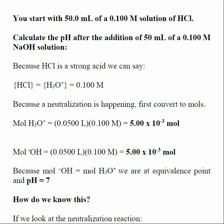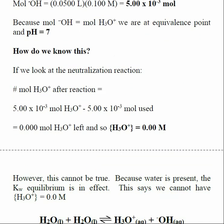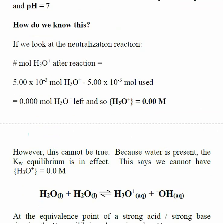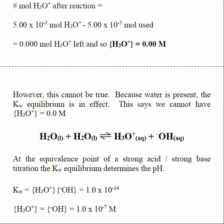So how do we know the pH is equal to 7? Let's look at what happens if we apply the calculations we've been using. We start with a certain number of moles of hydronium and then use up that number through the addition of base. If we do this subtraction, we get zero moles of hydronium left, or a concentration of hydronium equal to zero — and we know that cannot be true.